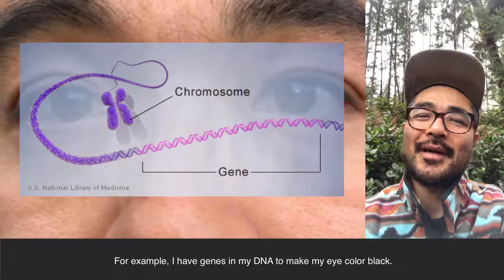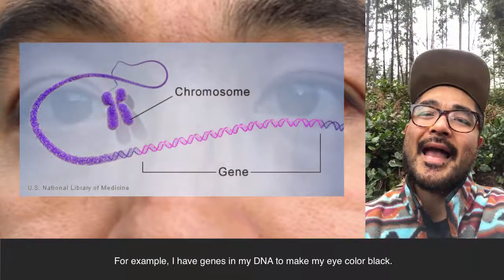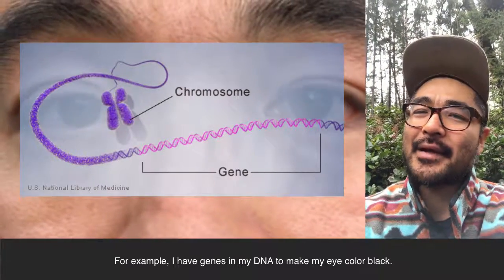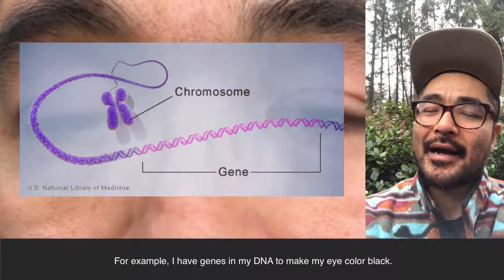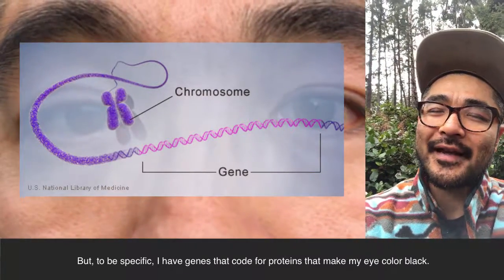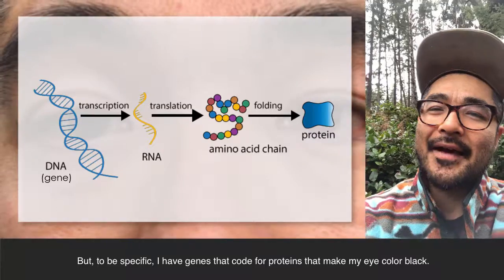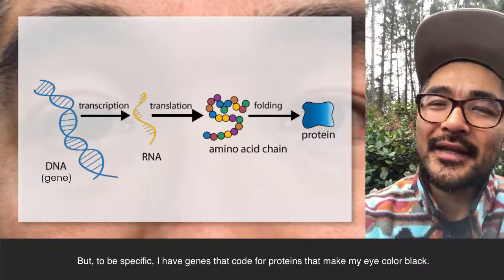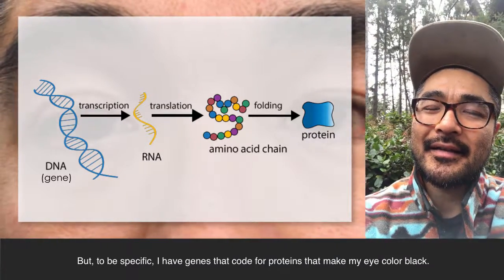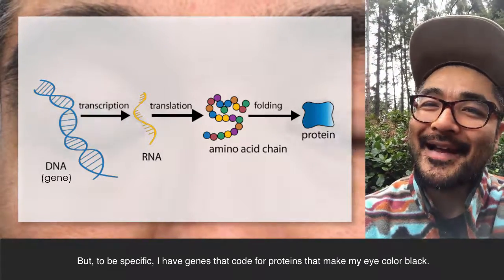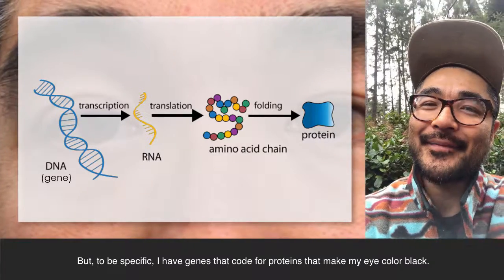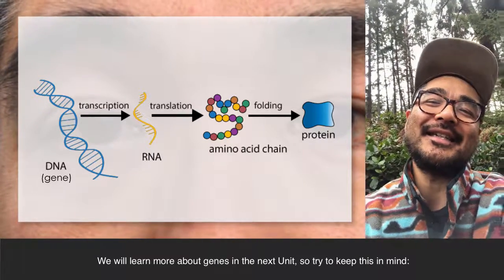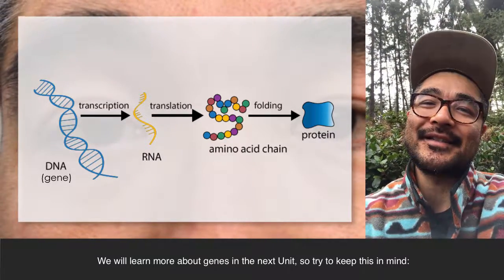For example, I have genes in my DNA to make my eye color black. But to be specific, I have genes that code for proteins that make my eye color black.